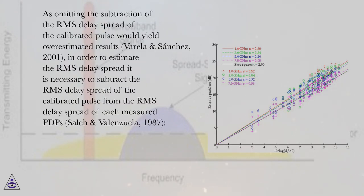As omitting the subtraction of the RMS delay spread of the calibrated pulse would yield overestimated results, Varela and Sanchez, 2001, in order to estimate the RMS delay spread it is necessary to subtract the RMS delay spread of the calibrated pulse from the RMS delay spread of each measured PDPs, Saleh and Valenzuela, 1987.